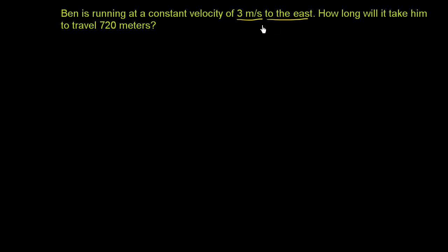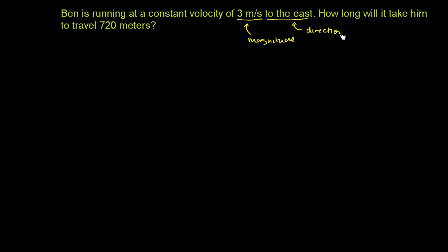Just as a review, this is a vector quantity. They're giving us the magnitude and the direction. If they just said 3 meters per second, that would just be speed — that's the magnitude. It is to the east, so they are giving us the direction. That's why it's velocity instead of speed.